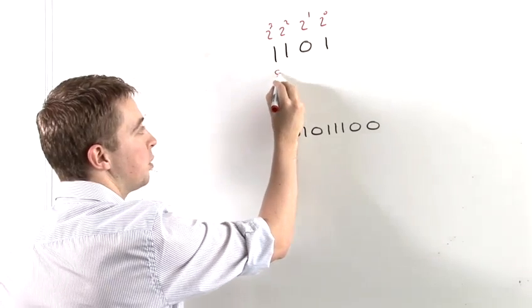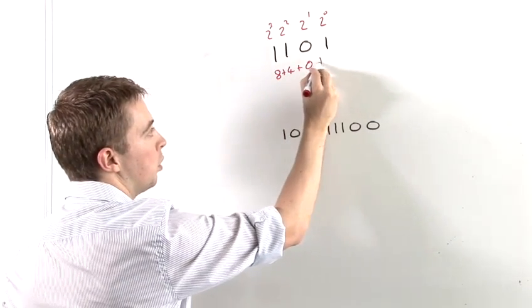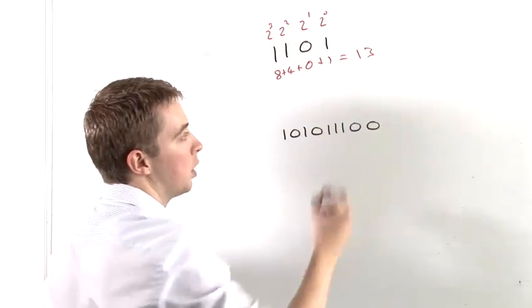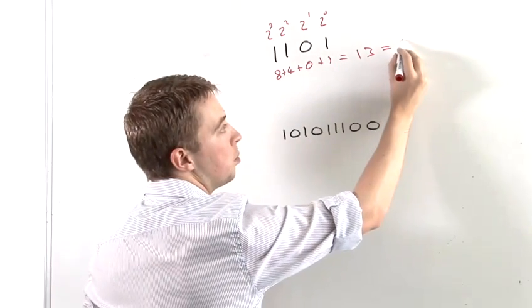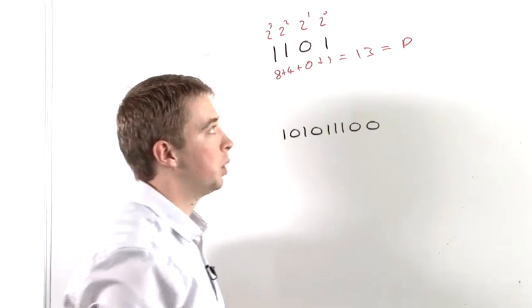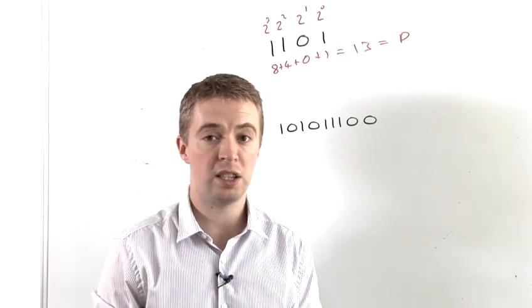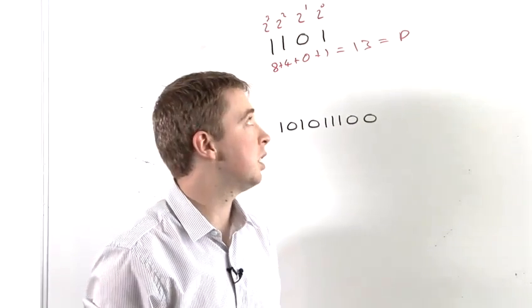So if we convert that into hexadecimal, you have 8 plus 4 plus 0 plus 1, which is 13. And in hexadecimal, this is represented by D. Because once we get to 9, we then have 10 is A, 11 is B, 12 is C and 13 is D.